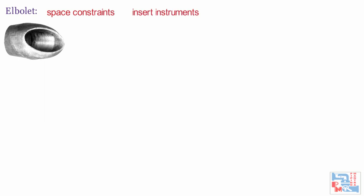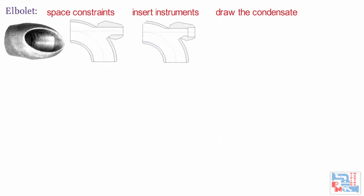Elbowlet is used to have branch connections at an elbow, useful when there are space constraints. It is used to insert instruments in small-size pipes, to draw condensate from steam lines, and for temperature gauge arrangements below 3-inch pipes. It is also available in socket end and threaded end.